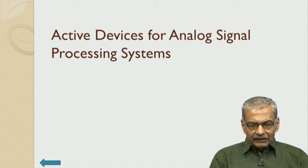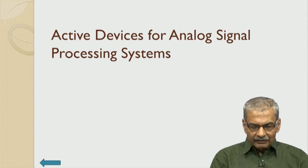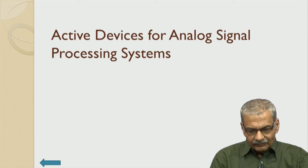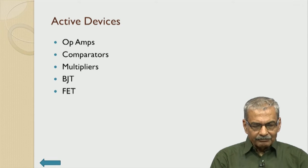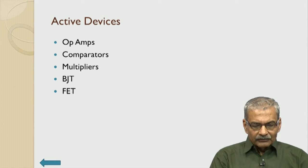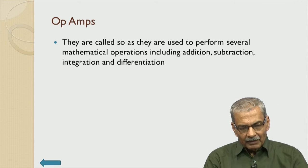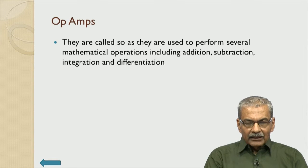Today we will start with an introduction to active devices. I am going to cover what is known as the network approach to realizing a universal active device — the operational amplifier, or op amp. In this same series we will be covering comparators, multipliers, and BJTs in that order.